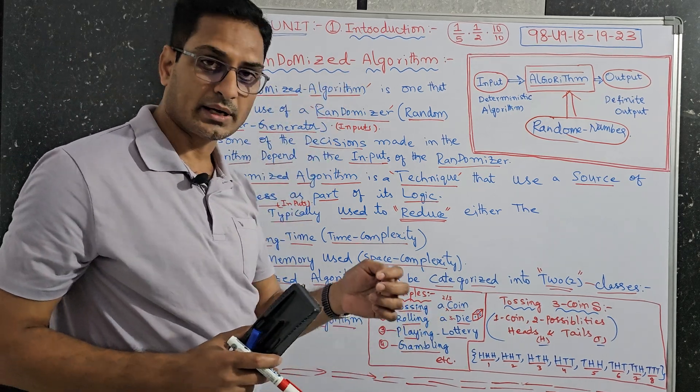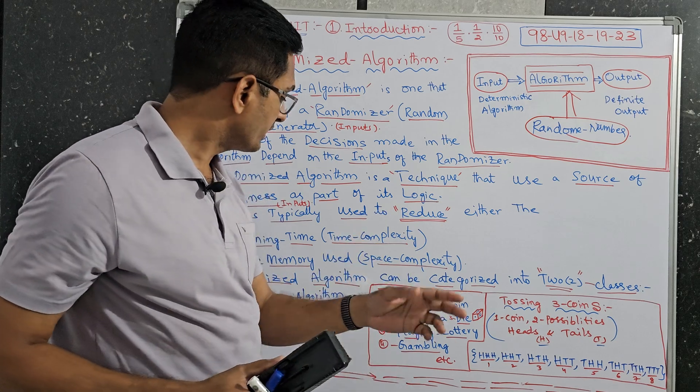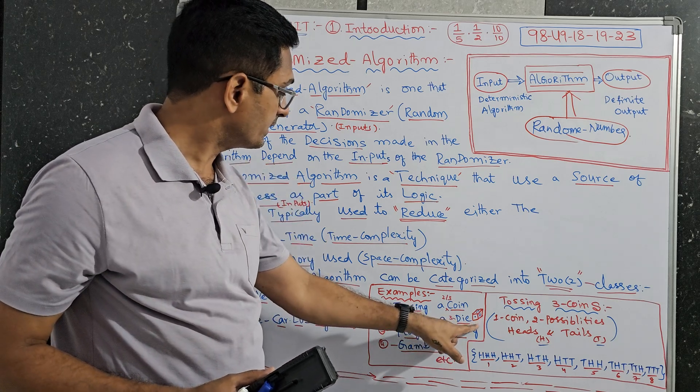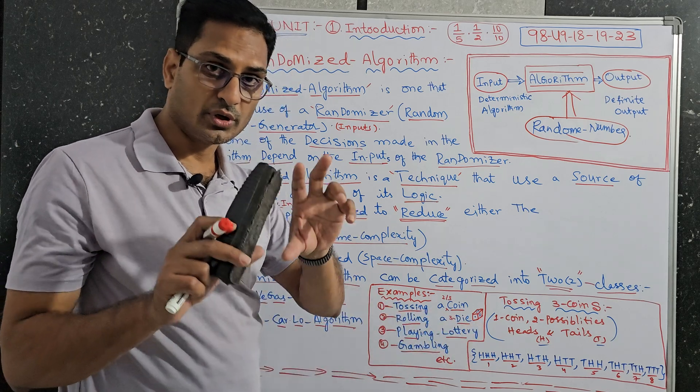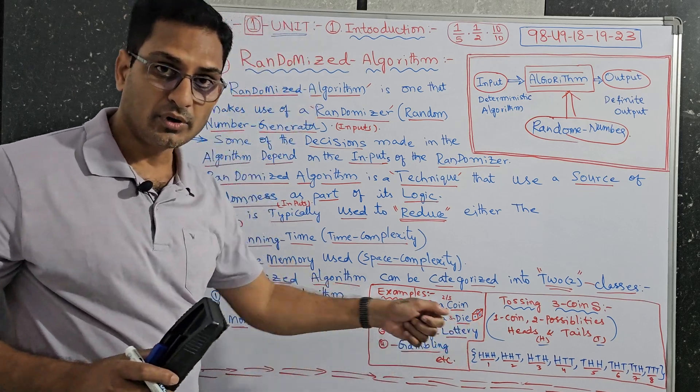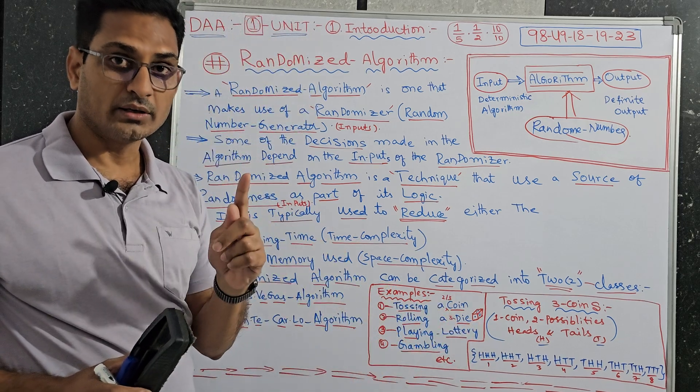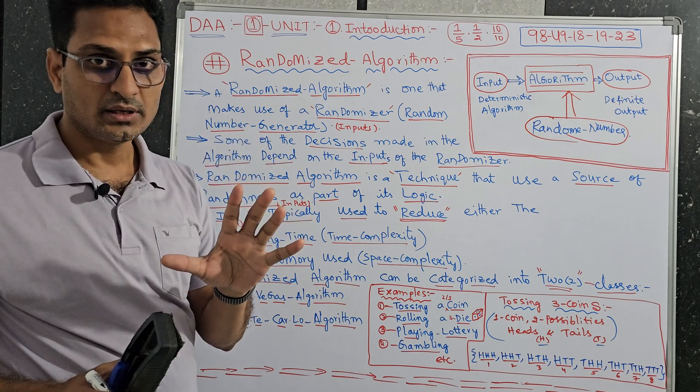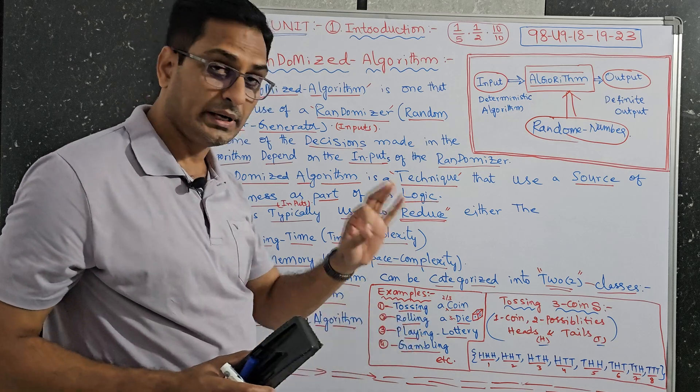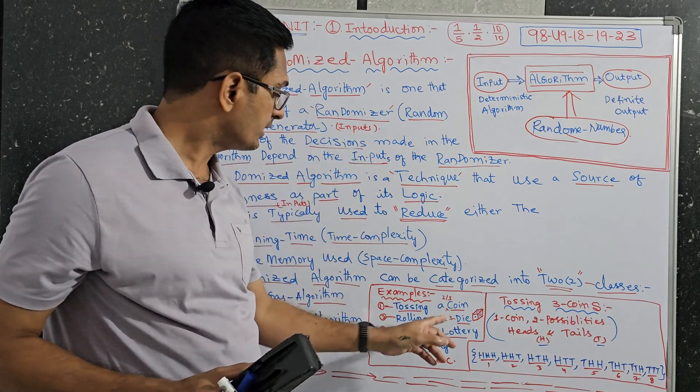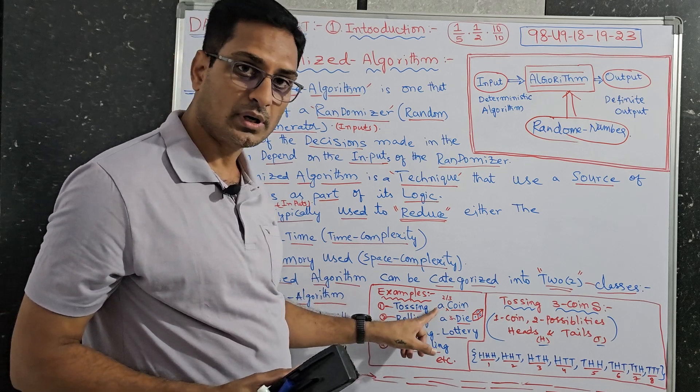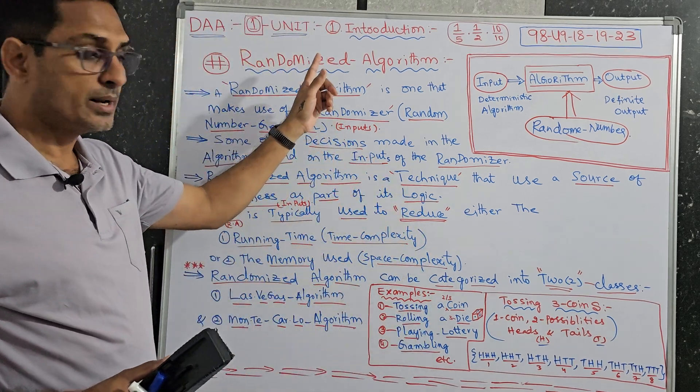Just like for example tossing a coin and throwing a die. Like we will play snake and ladder. There we have a die. When we throw a die, the probability of getting 1, 2, 3, 4, up to 6, we cannot say. That is called random.